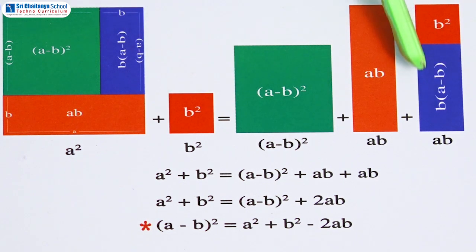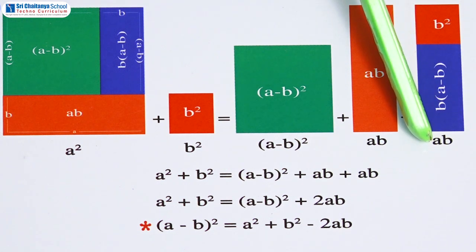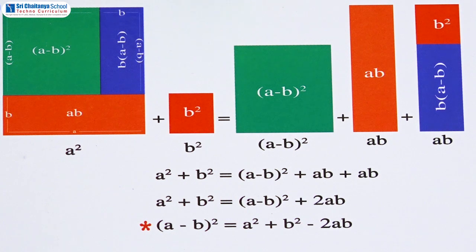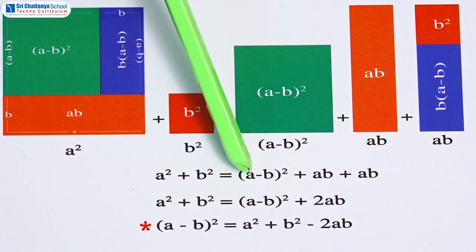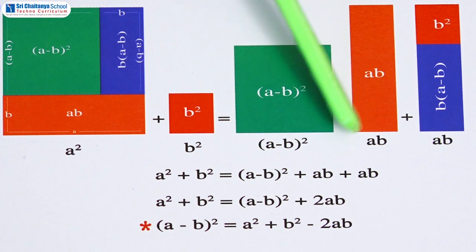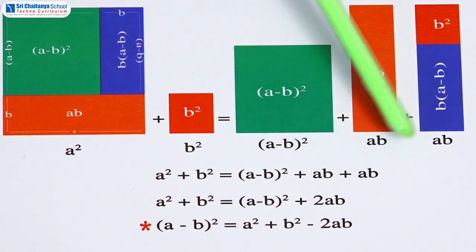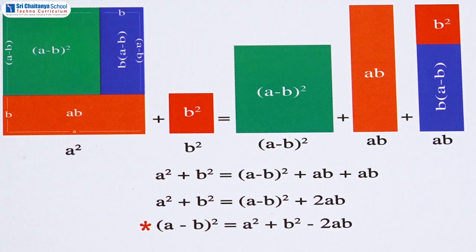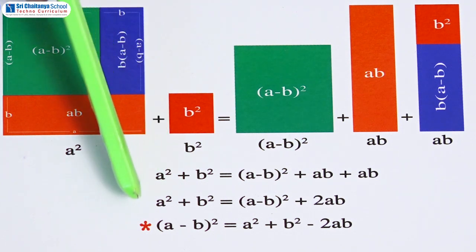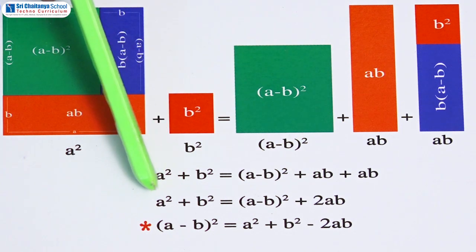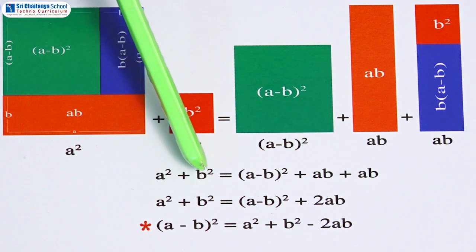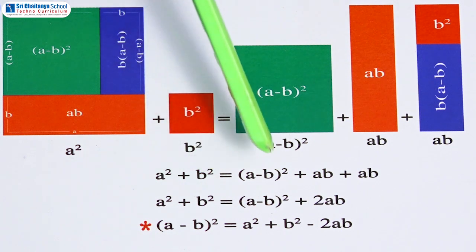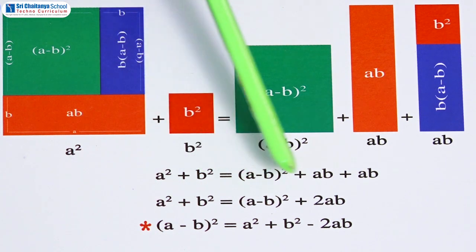The sum of the two parts is AB. Now, by adding, we will get (A-B)² + AB + AB. Let us rewrite this: we will get A² + B² = (A-B)² + 2AB.